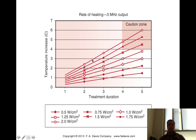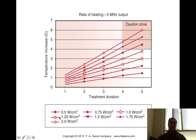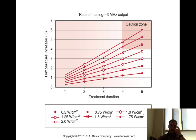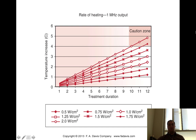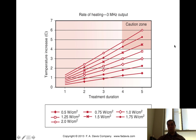For 3 MHz, which is more superficial, it heats faster. At 1.25 to 1.5 watts per centimeter squared at five minutes, you can get almost four to five degrees Celsius — nearly in the caution zone. There's less attenuation, less half-layer value, less Beer-Lambert attenuation effects. So with 1 MHz you treat a bit longer; with 3 MHz you treat shorter because the risk of burning or injuring the patient increases.